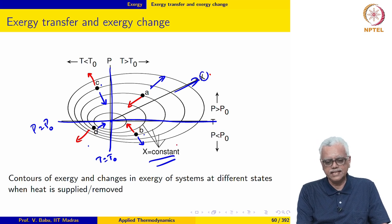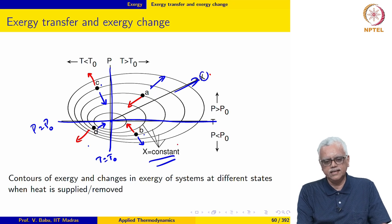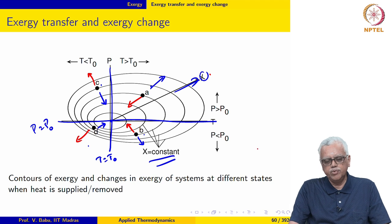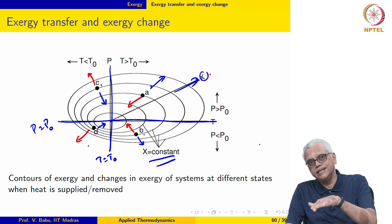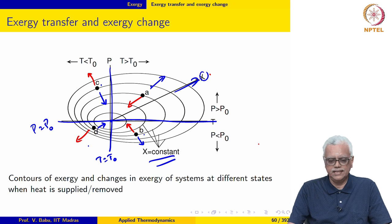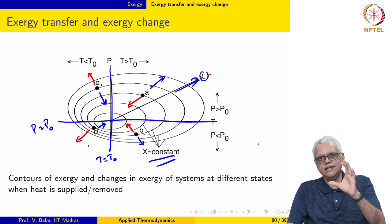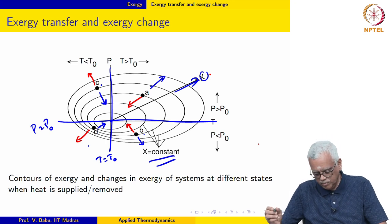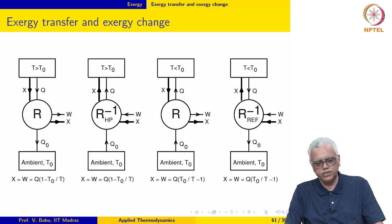Remember, exergy increases in the outward direction as shown here. So when the state point moves away from the origin, the exergy of that state is higher. Therefore, when heat is removed from a system at state C or D, the exergy increases. You can see that the direction of heat transfer and exergy transfer are opposite depending upon whether the temperature is greater than or less than T₀. Let us explore this in greater detail and see what happens in these four situations.